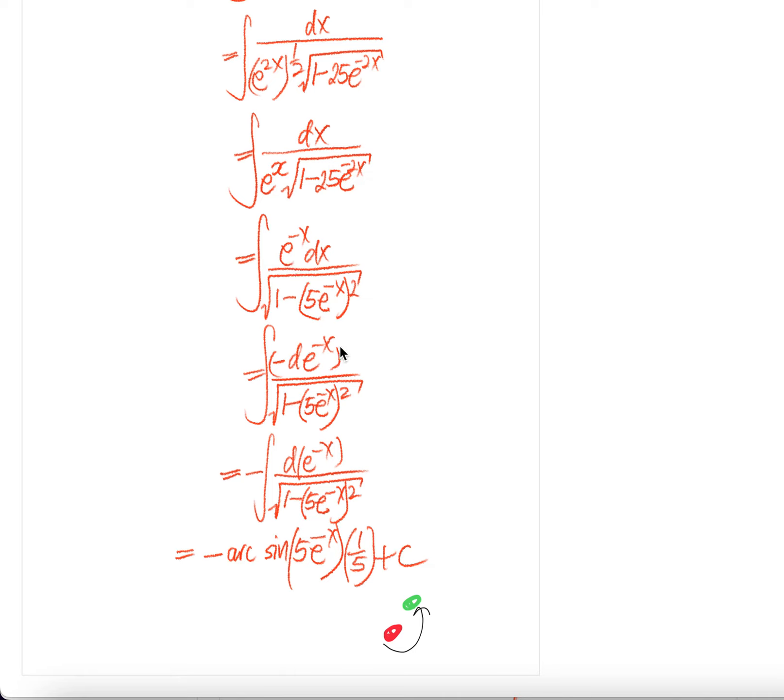So this is this. Minus 1 out, and then you have integral of d e to the power of negative x square root 1 minus 5 e to the power of negative x square.